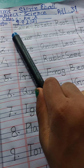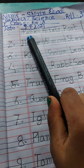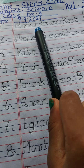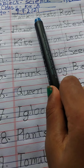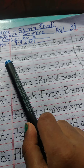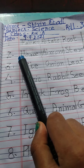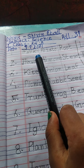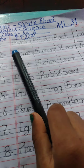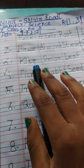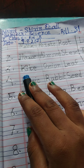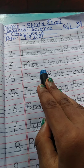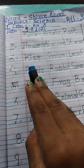Park. P-E-R-K. Park. Home. A-S-O-M-E. Home. Guide. G-I-T-E. Kite.